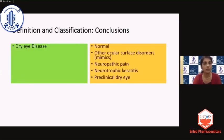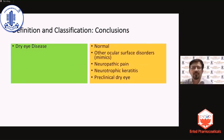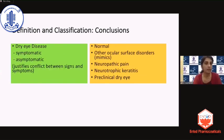In conclusion, the definition and classification of dry eye disease helps us categorize patients into whether they have dry eye disease or are normal, have other ocular surface disorders which could be mimics, whether they have neuropathic pain, neurotrophic keratitis, or a preclinical dry eye. If it is dry eye disease, whether the patient is symptomatic or asymptomatic — which justifies the conflict between signs and symptoms — and helps categorize patients into subtypes.